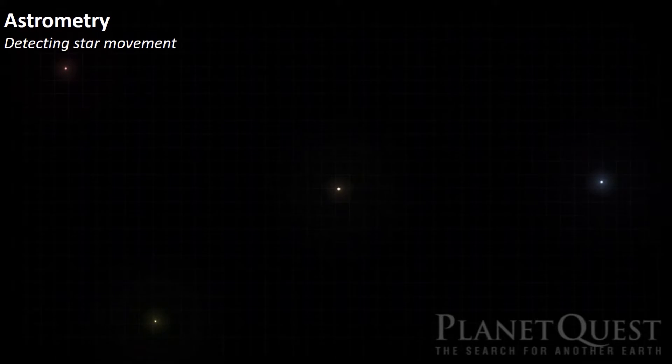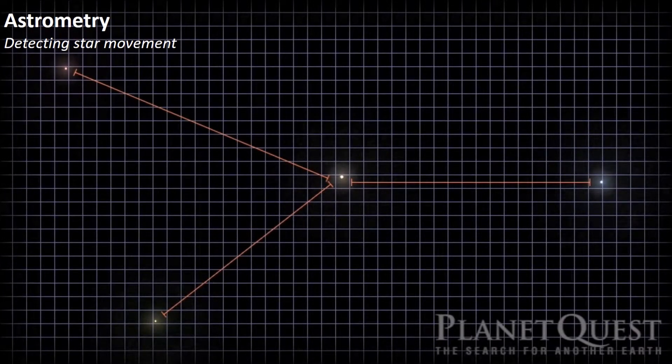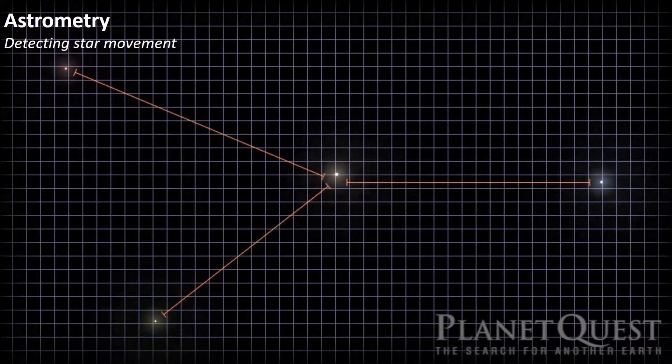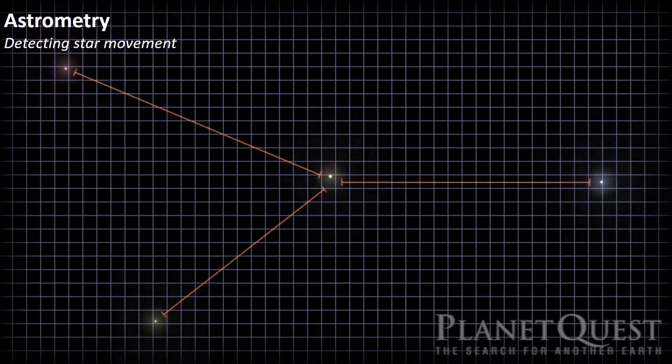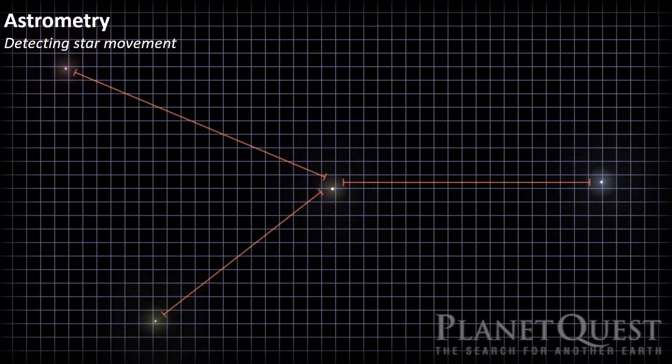The same is true for every planet orbiting a star. Which means that if you see a star moving in tiny circles, there is a planet nearby. This method works only if you are not in line with the planet's orbit, and it is called astrometry.